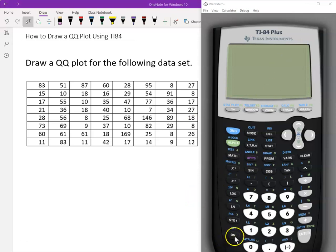Turn on the calculator, click one more time, and then choose STAT. Click one more time and we use the first to input the data, edit the data. I already typed all the data into L1, which is the first column. You can type your data into any other column you want.